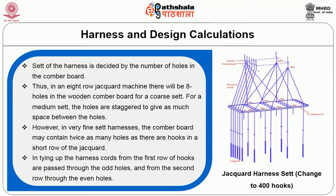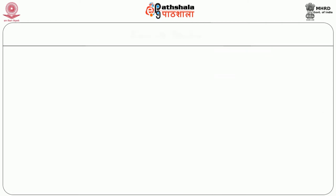In tying up, the harness cords from the first row of hooks are passed through the odd holes, and for the second row, through the even holes. The size of the repeat in weaving depends on the finished state of the fabric, as well as how the size of the repeat influences the jacquard capacity.